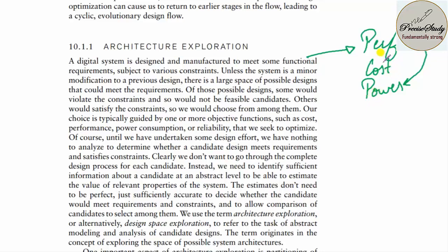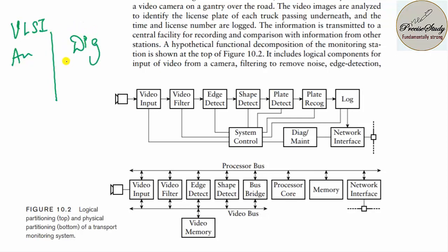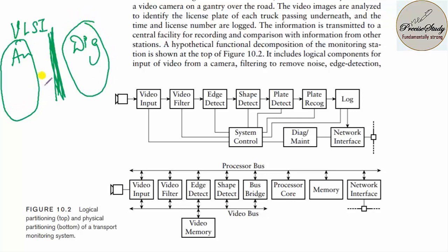Here, they have explained how you are going to classify logical and physical partitioning. In the VLSI industry, you are going to bifurcate analog components and digital components. In between, you are going to make use of thick oxide — thick silicon dioxide. There should be no interference between analog-to-digital signals or digital-to-analog signals.